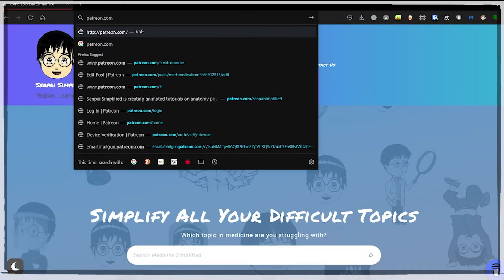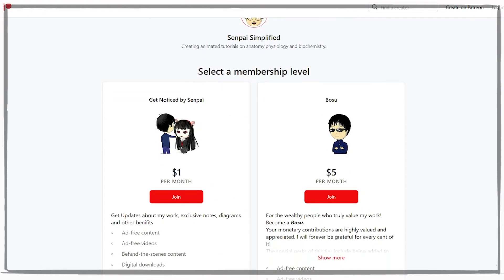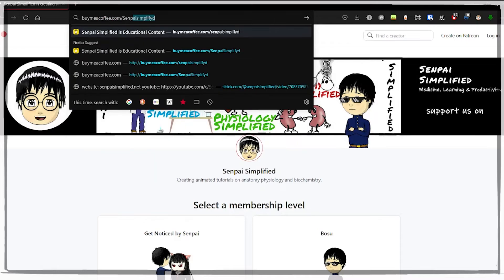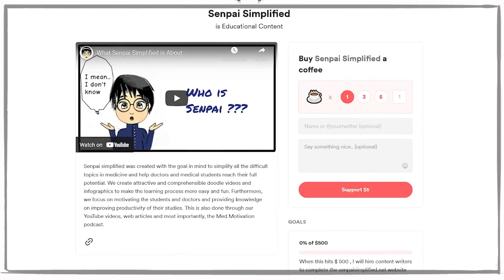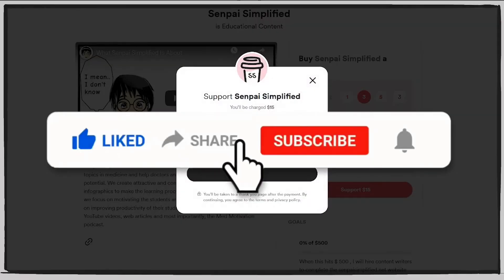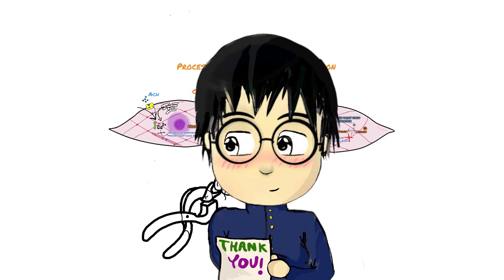If you want to support my YouTube channel or website, you can do so by becoming a patron at patreon.com/senpaisimplified, or you can buy me a coffee at buymeacoffee.com/senpaisimplified. Or, instead of spending money, you can just smash the like button and click subscribe. Thanks for watching. Peace.